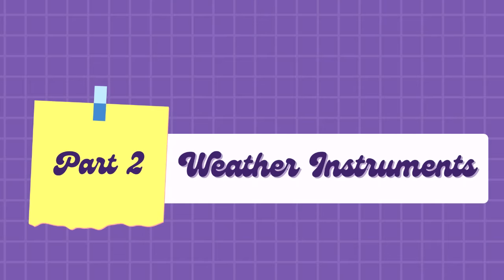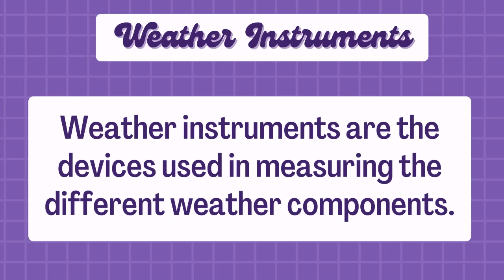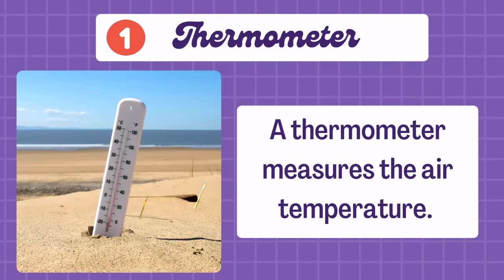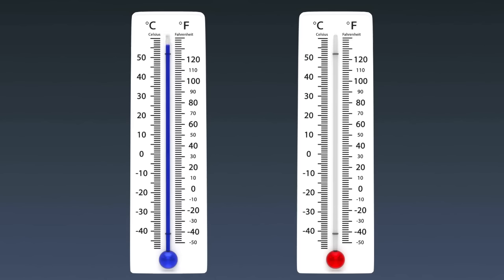Let us now move on to the weather instruments. Weather instruments are the devices used in measuring the different weather components. Number one: thermometer. A thermometer measures the air temperature. Most thermometers are closed glass tubes containing liquids such as alcohol or mercury. When air around the tube heats the liquid, the liquid expands and moves up the tube. A scale then shows what the actual temperature is.